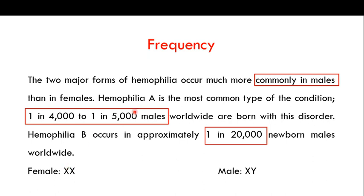That is why hemophilia is much more common in males than in females. Hemophilia A is the most common form — about 1 in 4,000 to 1 in 5,000 males worldwide are born with it. Hemophilia B is less common, affecting about 1 in 20,000 newborn males worldwide. I have a detailed video on why X-linked recessive disorders are more common in males, and I'll share the link in the description.